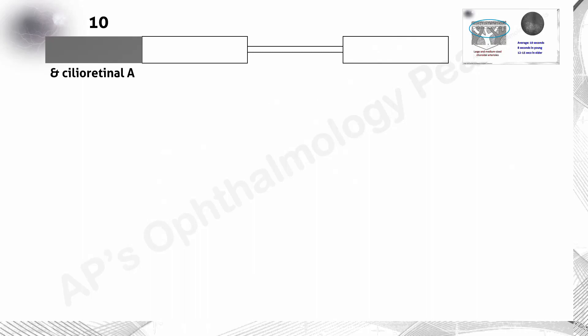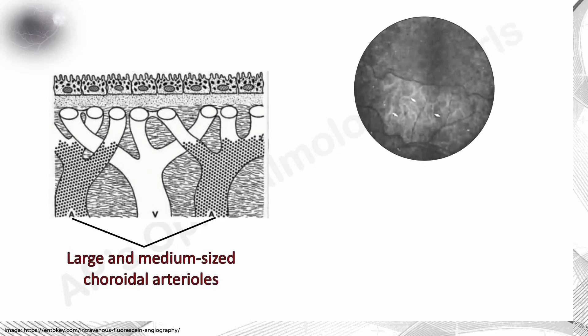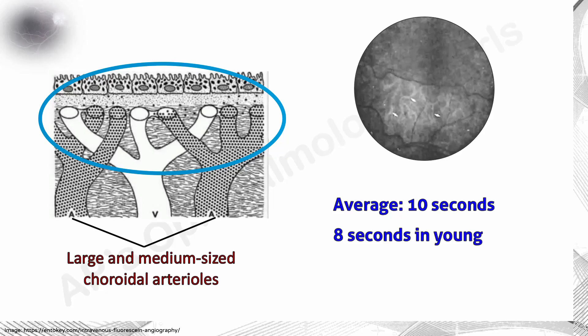First is the choroidal or pre-arterial phase of the fluorescent angiogram. When fluorescent reaches the posterior ciliary arteries, filling of the larger choroidal arterioles may be evident in people with a lightly pigmented fundus. In others, the background choroidal fluorescence is visible as a choroidal flush when the fluorescent reaches the choriocapillaris. This occurs at an average of 10 seconds after intravenous fluorescent injection, ranging from 8 seconds in young persons to 12 to 15 seconds in older persons.